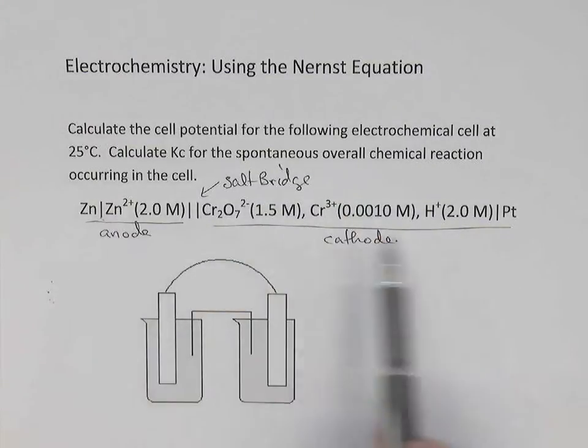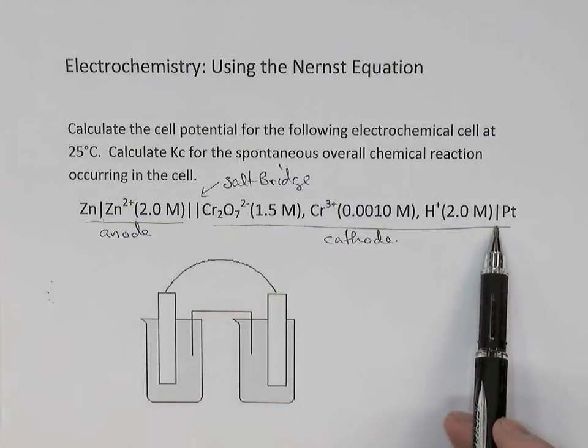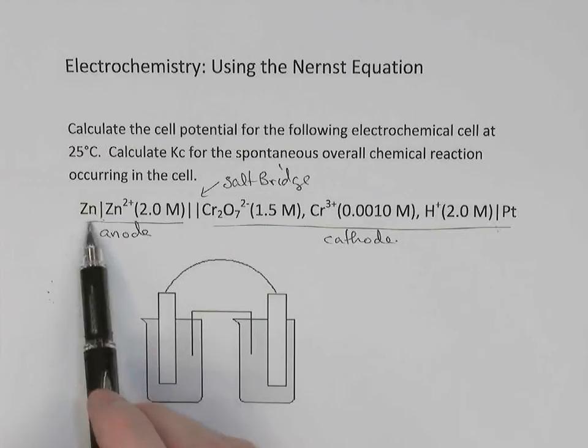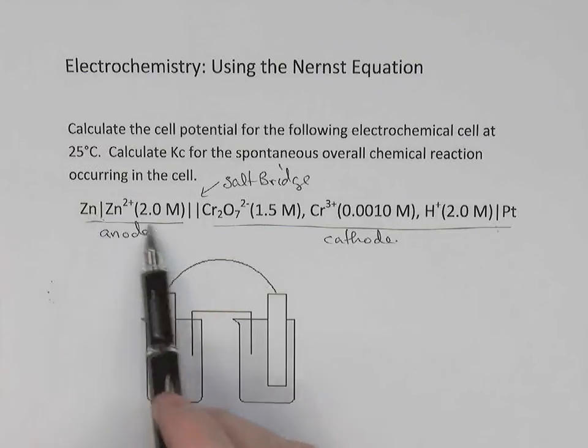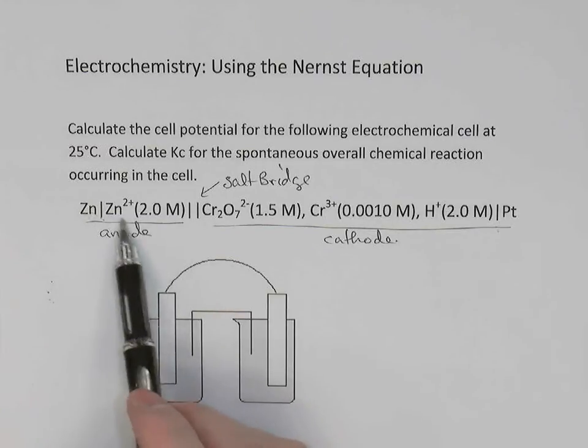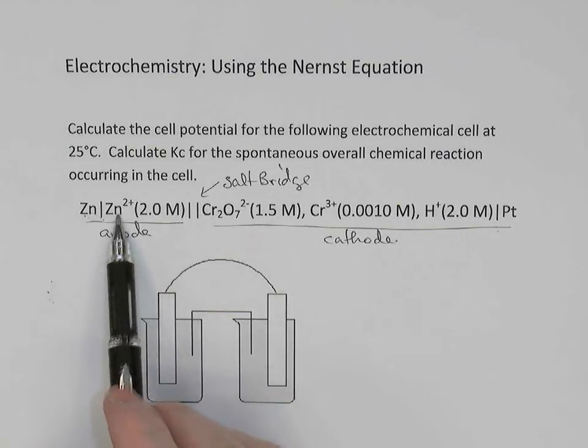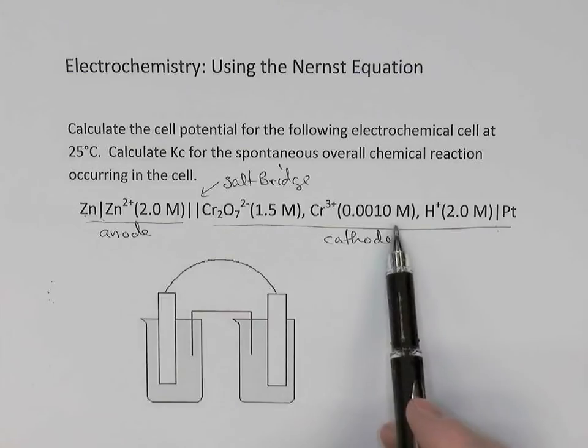The single vertical lines in the line notation are called phase boundaries. And they represent a boundary between a solid substance here, zinc metal, and an aqueous substance, zinc 2+. So a phase boundary because there's a solid in contact with aqueous zinc.